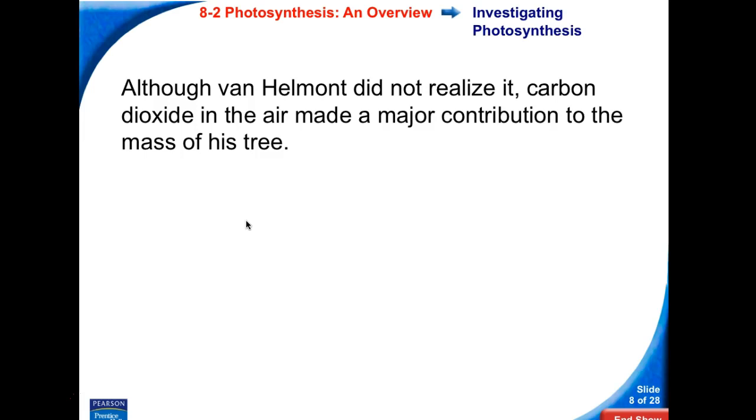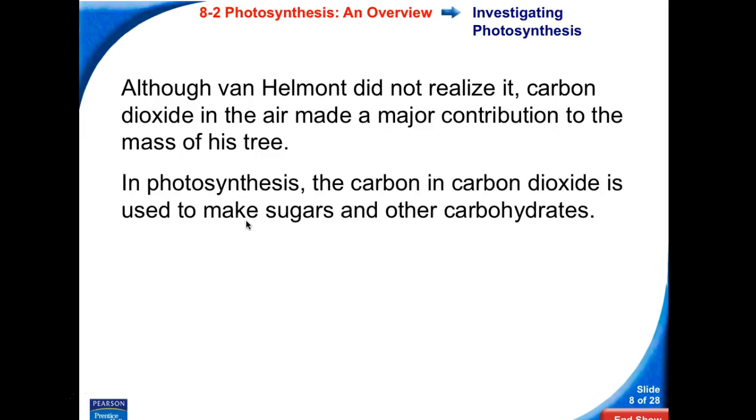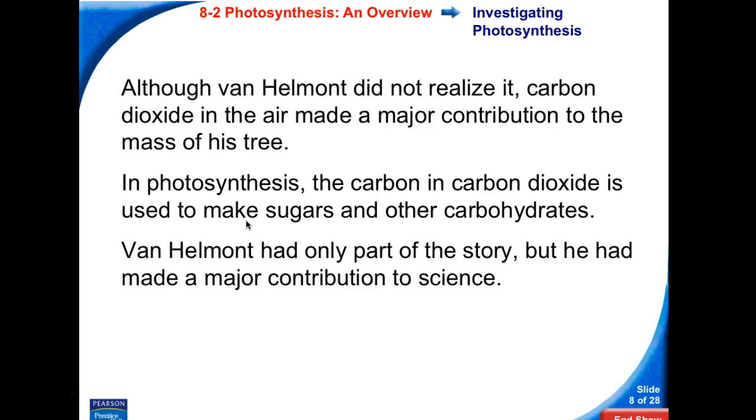Although Van Helmont did not realize it, carbon dioxide in the air is a major contributor to the mass of his tree. In photosynthesis, the carbon in each carbon dioxide is used to make sugars and other carbohydrates. Since carbon dioxide is CO2, one carbon per carbon dioxide molecule, how many carbon dioxide molecules would be needed to produce a sugar like glucose? Think of the molecular formula for glucose, that carbohydrate. Van Helmont had only part of the story, but he had a major contribution to science.